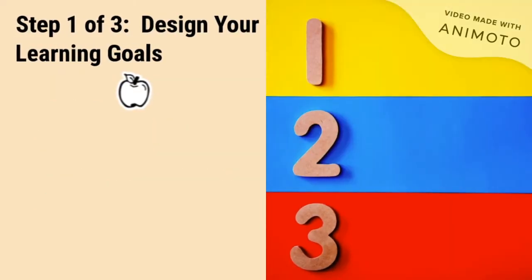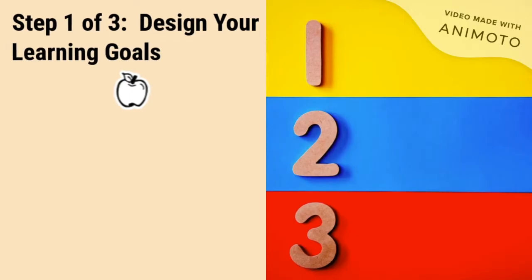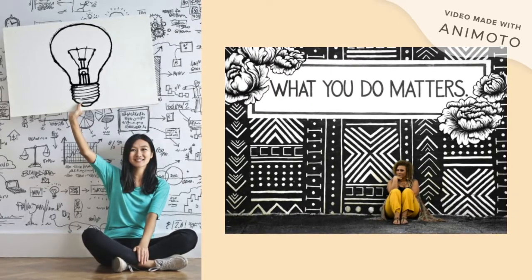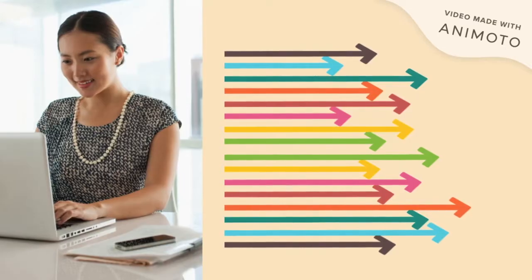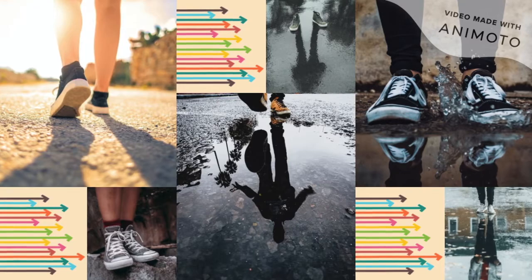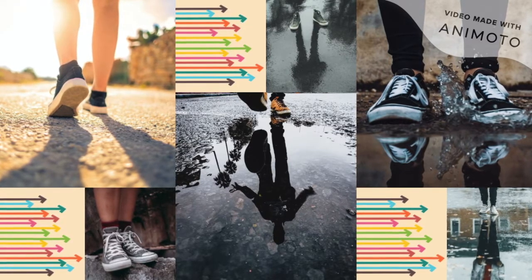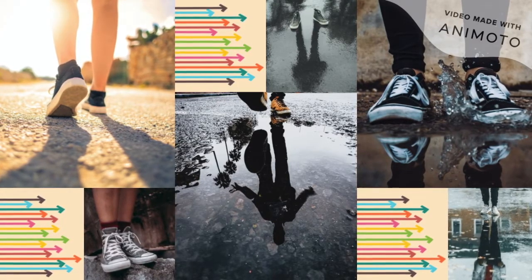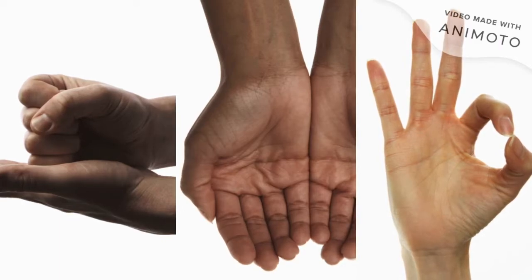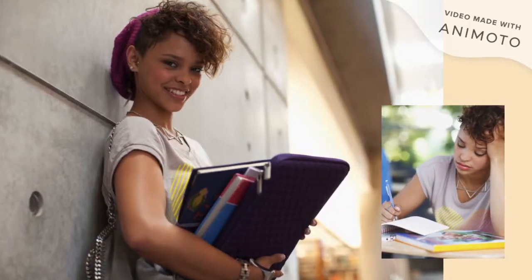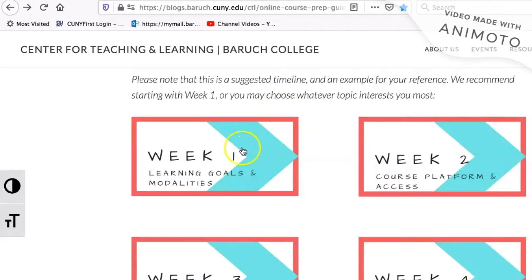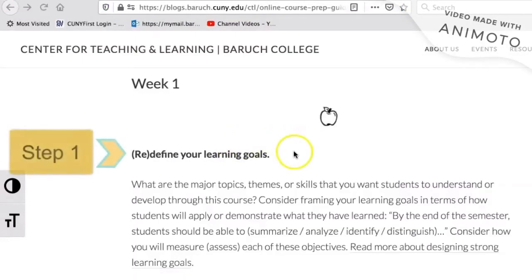First, consider defining your learning goals. A learning goal is something that you want students to be able to know or do by the end of the course. The first step of the guide will help you to establish learning goals that are concrete and transparent to students. Making learning goals explicit and accessible, and declaring sound rationale for them, will promote greater engagement among students in the online learning process. See the Week 1 guide for more information about this first step.